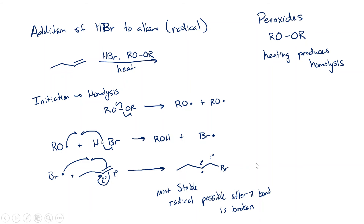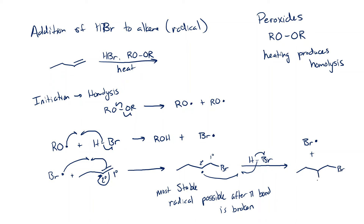That radical will react with another equivalent of HBr. It's going to take the hydrogen, and we regenerate a bromine radical. We're taking the bromine radical as our product, and that's also our starting material — so we have a chain reaction. We get hydrogen on the more substituted position, and bromine goes on the less substituted position.